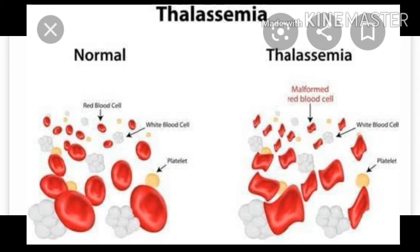Thalassemia differs from sickle cell anemia in that the former is a quantitative problem — too few globin molecules are synthesized — while the latter is a qualitative problem of synthesizing an incorrectly functioning globin.